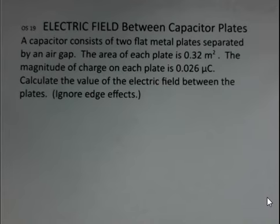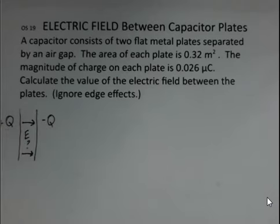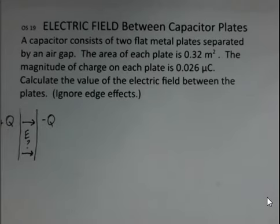what's the direction of the electric field? Now, electric field goes in the direction a positive charge would move. If it's free to move, it's going to be repelled by positive, attracted to negative. So it's going to cross off to the right.